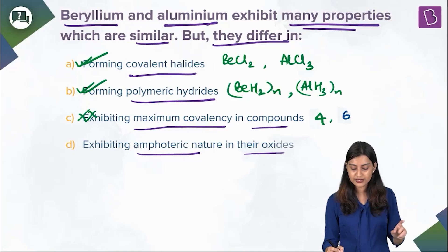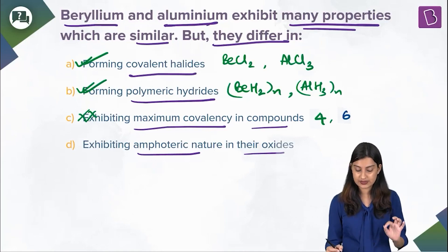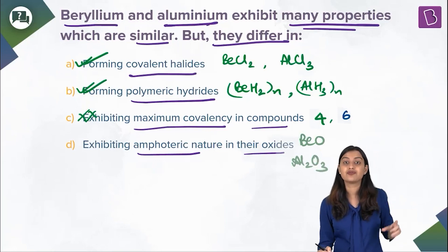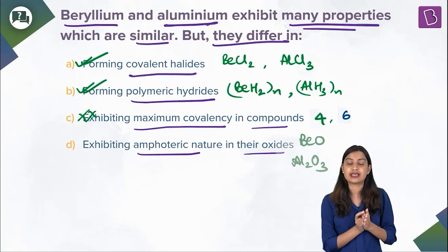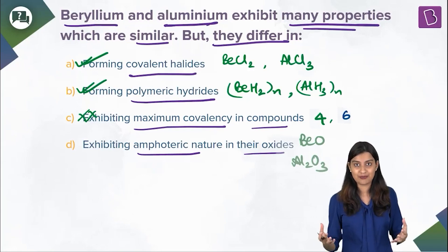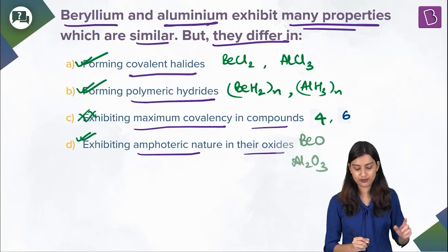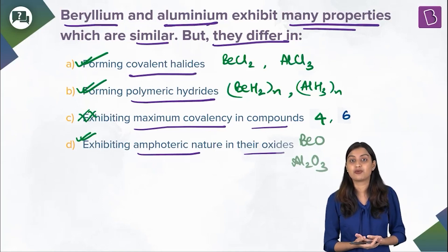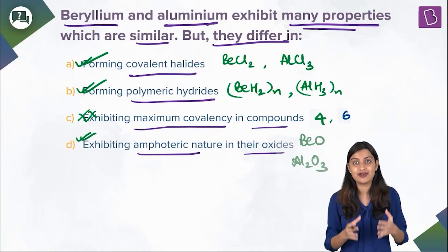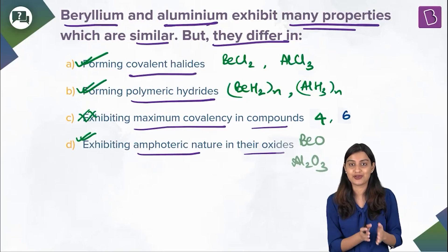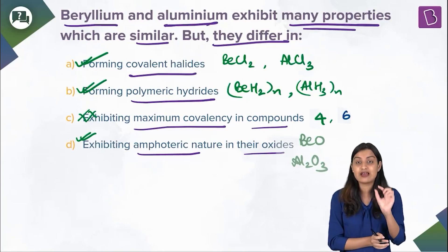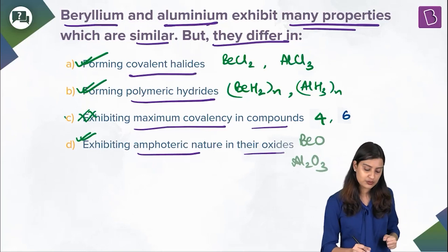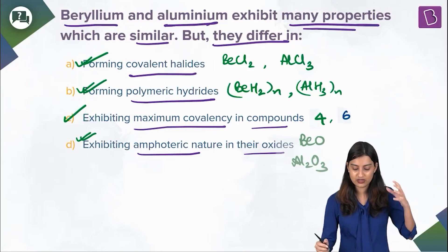Option D — exhibiting amphoteric nature in their oxides. You have beryllium oxide and Al₂O₃, and both of these are amphoteric, meaning they can react with both acids and bases. So again this is a similar property. In fact, beryllium and aluminium have a lot of similar properties, attributed to the diagonal relationship from the chapter on periodic properties. So the one property that is not common between beryllium and aluminium is their maximum covalency, which means option C is the right answer.